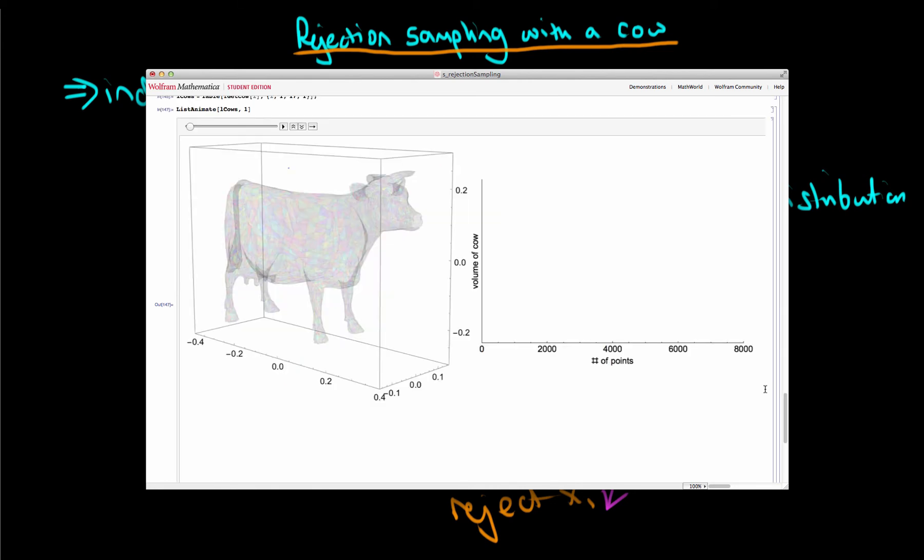So what can we actually use rejection sampling for, from the cow to actually do here? Well what we can do is we can use the ratio of rejected to accepted samples to help us to work out the integral which is the volume of the cow.